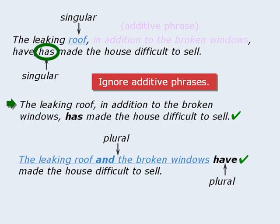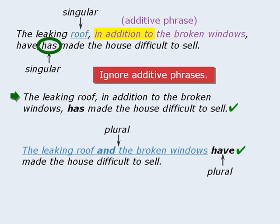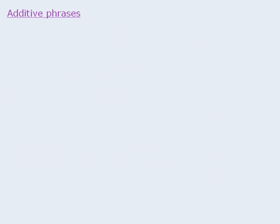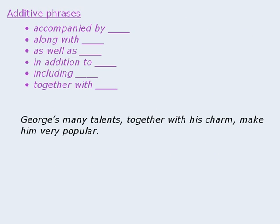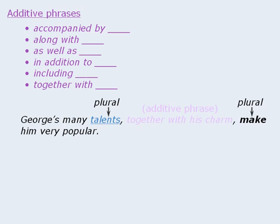One family of additive phrases begins with the words 'in addition to.' Some more additive phrases to remember include 'together with' and others. For example, the sentence 'George's many talents, together with his charm, make him very popular' is grammatically correct. When we ignore the additive phrase 'together with his charm,' we can see that the subject of this sentence is 'talents,' and this plural subject requires the plural verb 'make.'